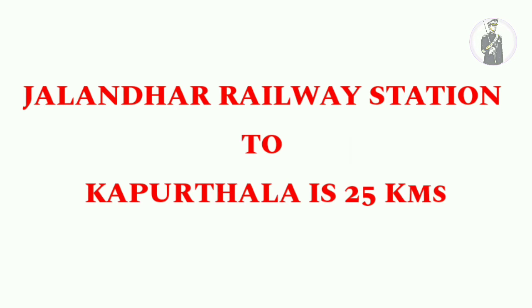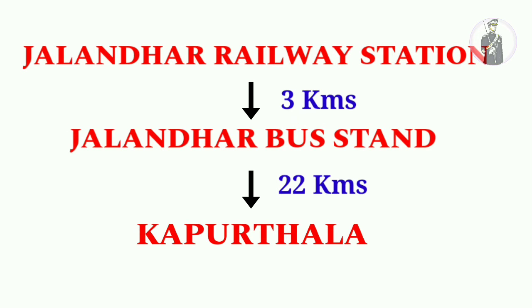There are two ways to reach Kapoor Thala from Jalandhar. The first is by train — local trains run from Jalandhar city station. The second is by bus, and I advise you to prefer the bus. From Jalandhar railway station, take an auto to Jalandhar bus stand, which is hardly a 10-minute route. At the bus stand, go to the local buses area where buses to Kapoor Thala run every 10 minutes. As the distance is only 22 kilometers, it will take around 25 to 30 minutes to reach Kapoor Thala from Jalandhar.